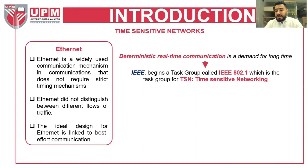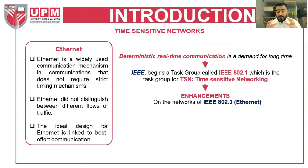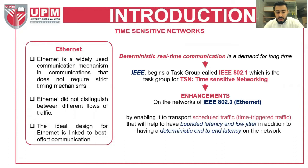Deterministic real-time communication has been a demand for a long time. IEEE began a task group called IEEE 802.1, which is the task group for TSN, Time-Sensitive Networking. The main work for this group is to make enhancements on the IEEE 802.3 Ethernet networks, enabling it to transport scheduled traffic — specifically time-triggered traffic — to achieve bounded latency and a deterministic end-to-end latency on the network.